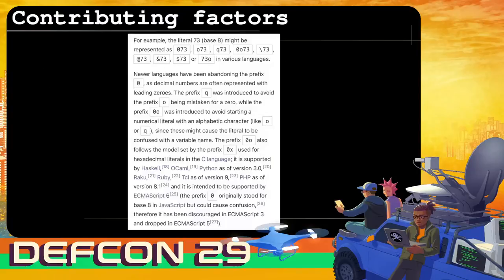This is an interesting excerpt from Wikipedia on octal — there are many ways to prefix numbers to represent octal. A lot of people know the backslash notation, but 0o is typical of octal and 0x is typical of hexadecimal in C. That was adopted by Python, OCaml, Haskell, Raku, Ruby, Tcl, PHP, and ECMAScript — which is JavaScript — and there's some confusion there because ECMAScript 6, 3, and 5 all differ in how they should or shouldn't parse octal values.